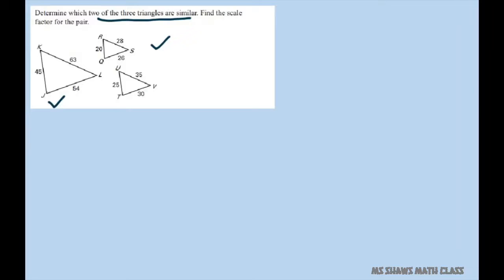All right, so let's see if KJ and RQ, what we get with that. So that's 45 to 20 and you divide both of those by 5, you get 9 over 4.